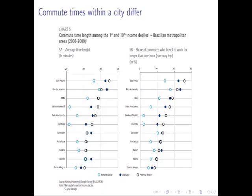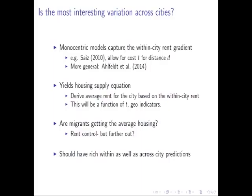Here is the share commuting longer than one hour each way. Taking Rio de Janeiro, about 10% of the richest are traveling one hour one way. For the poorest, close to 20% are traveling one way over an hour. This is really interesting because when you write down a model of within-city variation, you get predictions on people trading off how far away they are versus opportunity cost of time versus housing prices — which is what you get in a standard monocentric model.